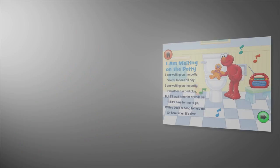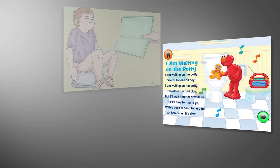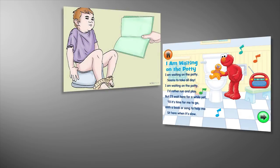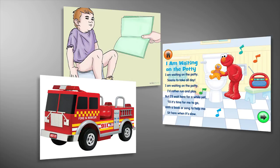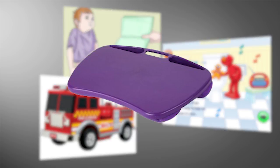Motivators might include singing a potty song, reading a favorite book, or even having a special toy while they're practicing. You can keep these items from falling into the toilet by using a padded lap desk while your child is seated.